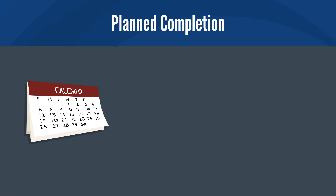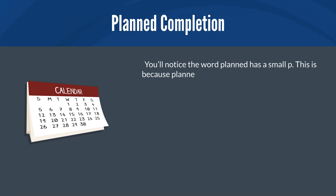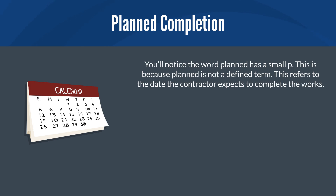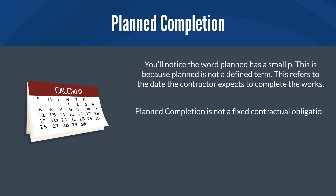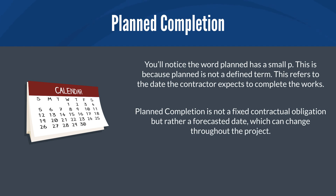Planned completion, on the other hand, is mentioned within Clause 31.2. You'll notice the word 'planned' has a small p — this is because planned is not a defined term. This refers to the date the contractor expects to complete the works. Planned completion is not a fixed contractual obligation, but rather a forecasted date which can change throughout the project.